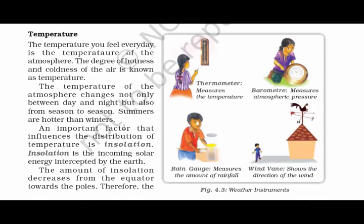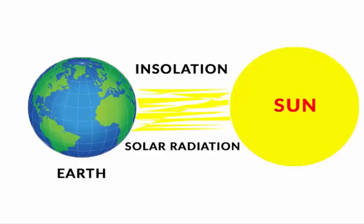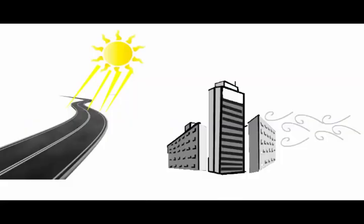Now let's read about temperature. The hotness and coldness of the air around us is known as temperature. The temperature of the atmosphere changes not only between day and night but also from season to season — summers are hotter than winter. An important factor that influences the distribution of temperature is insolation. Insolation is the incoming solar energy intercepted by the Earth, and it decreases from the equator towards the poles, since the sun's rays fall directly on the equator. Temperature in cities is much higher than in villages because concrete, metal buildings, and roads get heated during the day and release heat at night. Also, crowded high-rise buildings trap warm air, thus raising the temperature of cities.